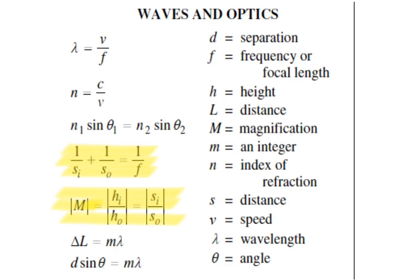Looking at your formula chart, those two equations do appear there. The magnification equation is written in absolute value terms on the chart, but I want you to know when the image height should be negative and when it should be positive — it's not too hard.